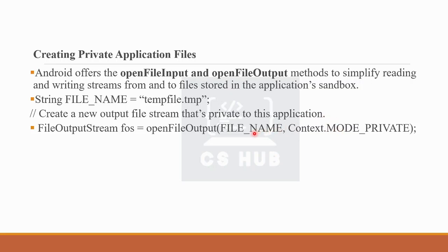The two parameters for openFileOutput are the file name and the context mode. By default, one application opens in private mode. The available modes are: MODE_PRIVATE, MODE_WORLD_READABLE, and MODE_WORLD_WRITABLE. These are class constants used to control file visibility — private means only the calling application can access it, while world readable or world writable makes it accessible to other applications.